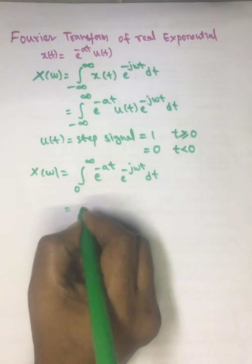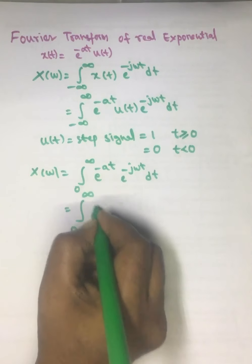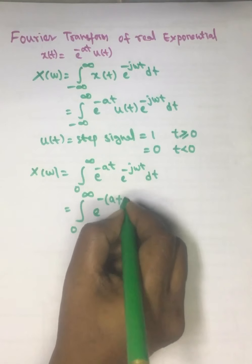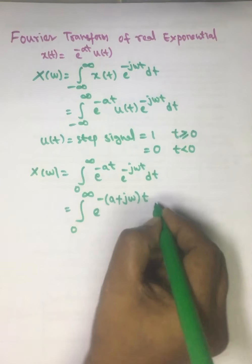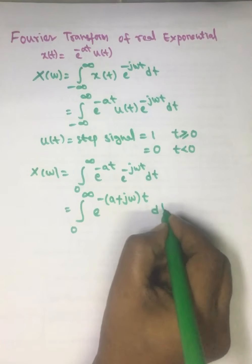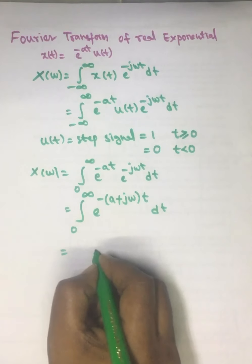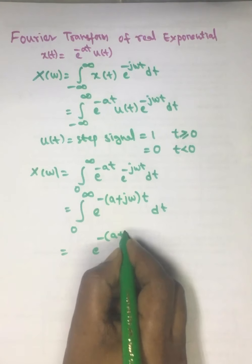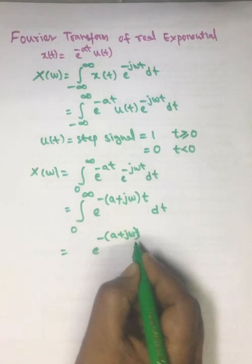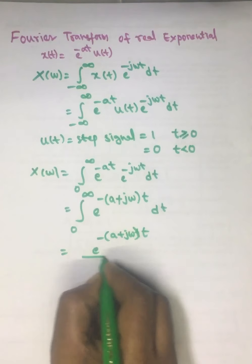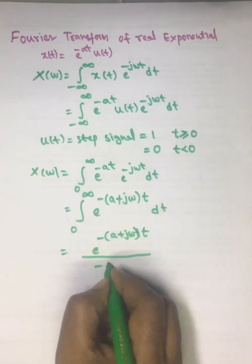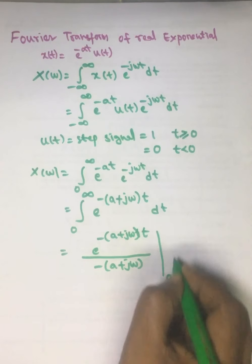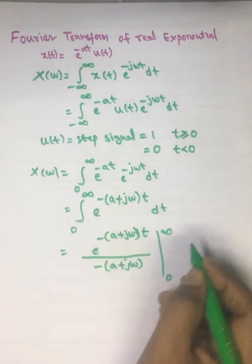Now, this can be written as the integral from 0 to infinity of e^(-(a + jω)t) dt. This can be evaluated as e^(-(a + jω)t) divided by -(a + jω). We then substitute the limits 0 to infinity.